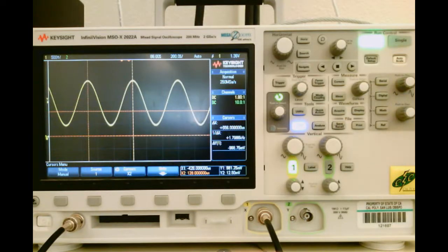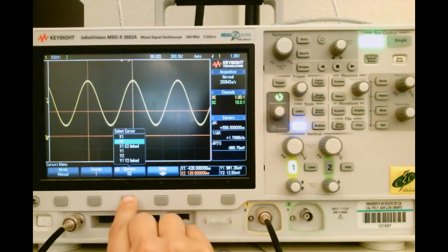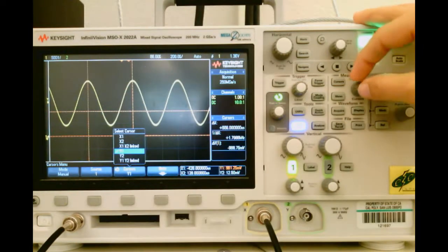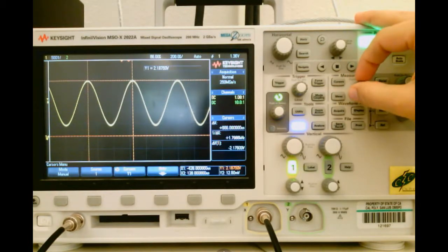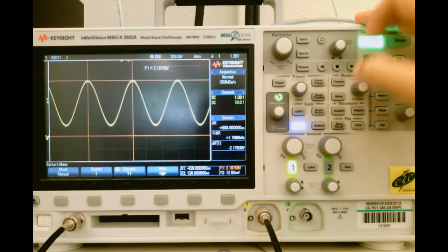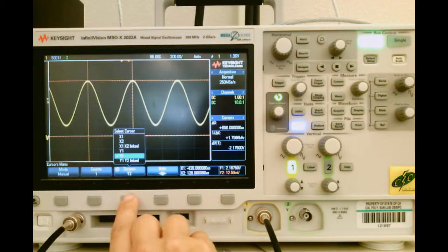Now to get the peak-to-peak voltage, I will just do the same thing, but with the Y cursors. I'll move the Y cursor to the peak and the other Y cursor to the trough.